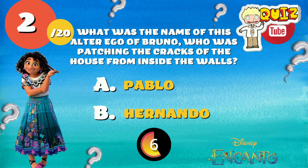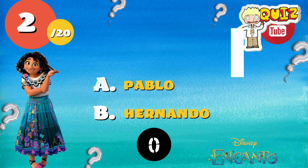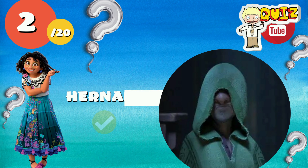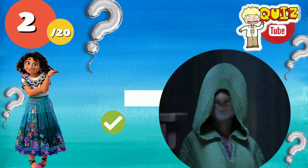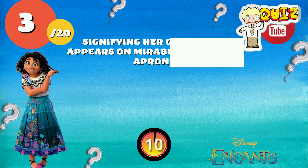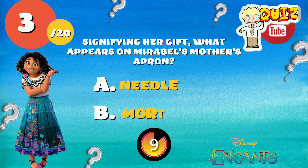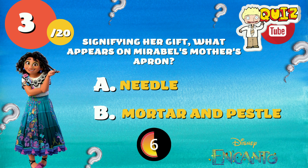who was patching the cracks of the house from inside the walls? The right answer is... Signifying her gift, what appears on Mirabel's mother's apron?